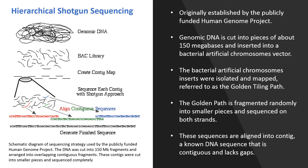Each BAC fragment in the golden path is fragmented randomly into smaller pieces, typically one to two kilobases long, and each piece is cloned into a plasmid vector. The resulting transformed bacterial colonies are picked at random and sequenced on both strands. These sequences are aligned so that identical sequences are overlapping, and these contiguous pieces are then assembled into finished sequence once each strand has been sequenced about four times.